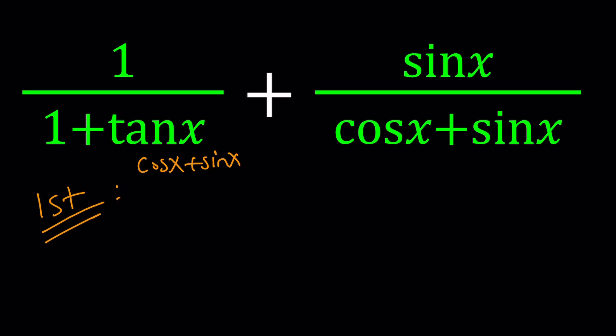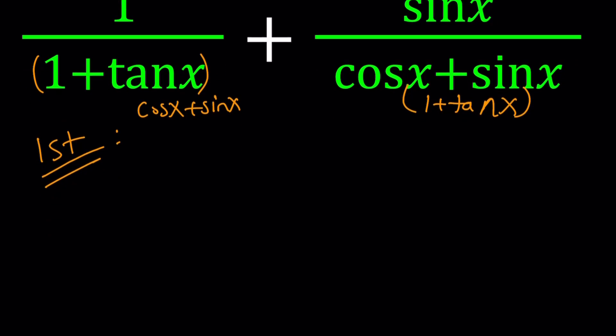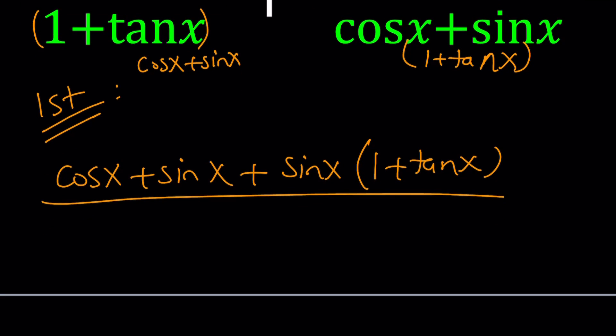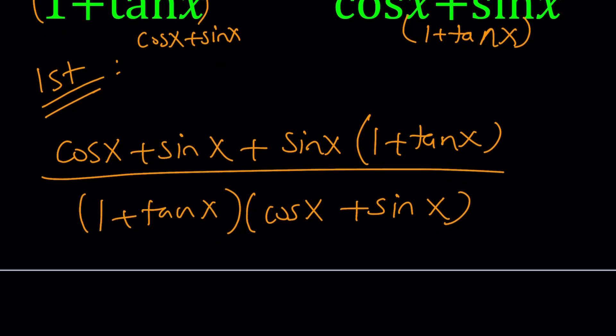We multiply this by that and this by 1 plus tangent x. So I'm going to multiply those, and of course on top as well. So the top is going to be cosine x plus sine x plus sine x times 1 plus tangent x. And at the bottom, we're going to have 1 plus tangent x multiplied by cosine x plus sine x. It doesn't matter which order you write them in, as long as you write them correctly.